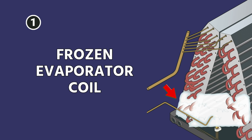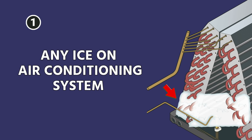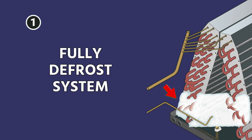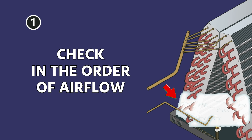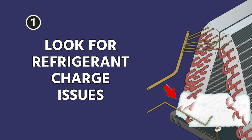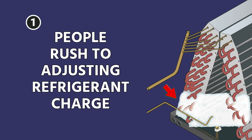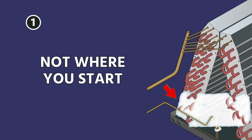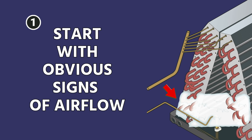So step one: if you do find a frozen evaporator coil or any ice on an air conditioning system running in cooling mode, first you need to fully defrost the system. Defrost the coil, then check in the order of airflow, then look for refrigerant restrictions, then look for refrigerant charge issues. So many people rush to adjusting the refrigerant charge — that is not where you start. Start with the obvious signs of airflow, then move forward from there.